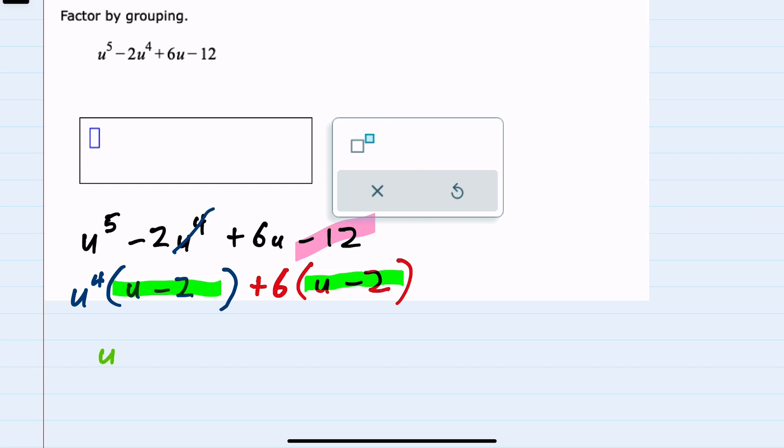From this first term, if I factored out u minus 2, what would be left? Well, the u^4 on the outside would be left. And then from the second term, if I factored out the u minus 2, I would be left with that plus 6 that's outside of that u minus 2 in parentheses.